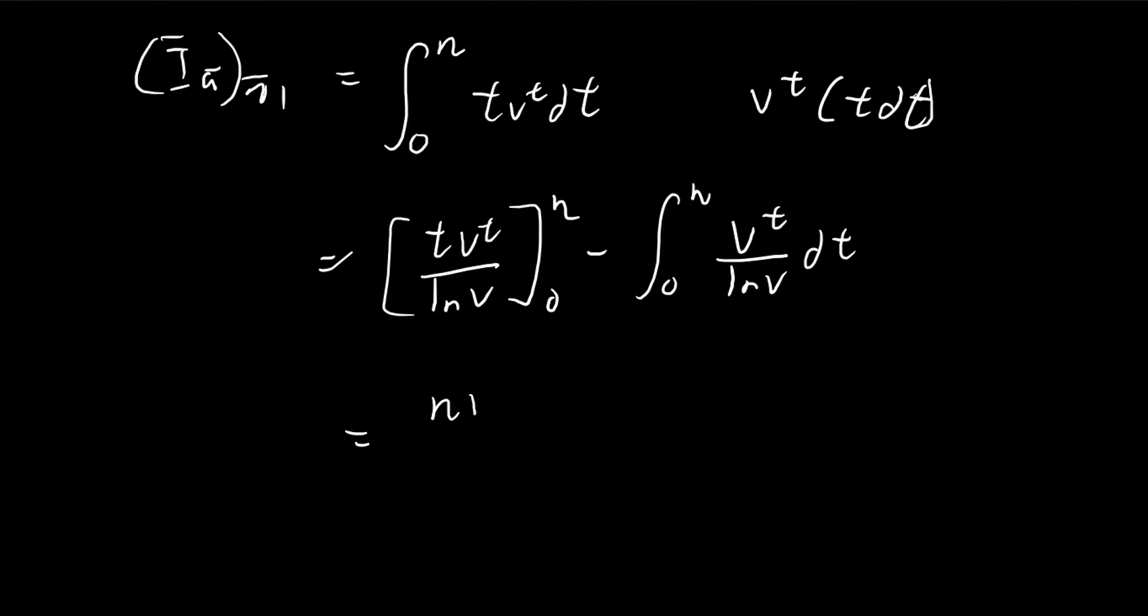So we can substitute the numbers in. 0 is just 0 because there's a t over here. And then natural log v is just negative delta. Because recall that natural log 1 plus i is equal to delta. And then natural log v is equal to natural log 1 plus i to the power of negative 1. So you can pull the negative down because it's a logarithm, which is equal to negative delta.